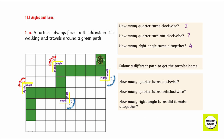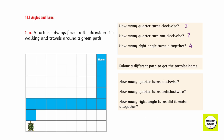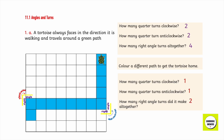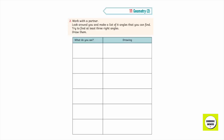Color a different path to get the tortoise home. How many quarter turns clockwise? How many quarter turns anti-clockwise? How many right angle turns did he make altogether? This is the new part. First turn: right angle clockwise. Second turn: right angle anti-clockwise.